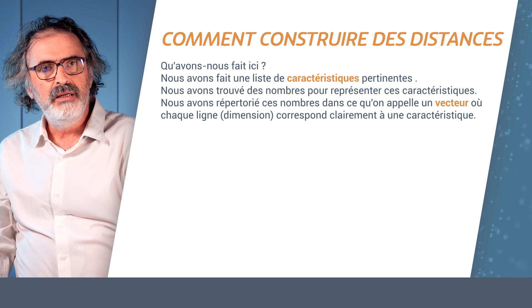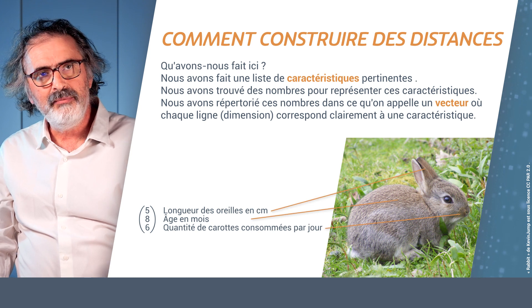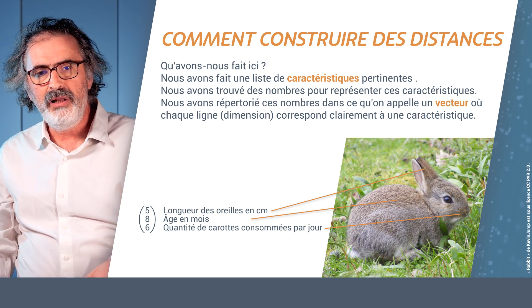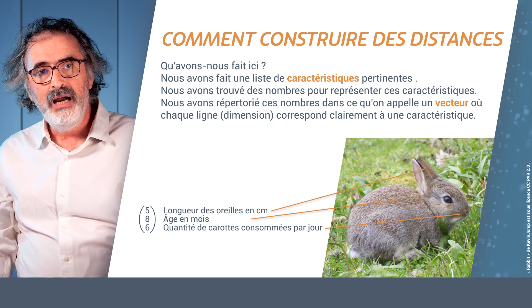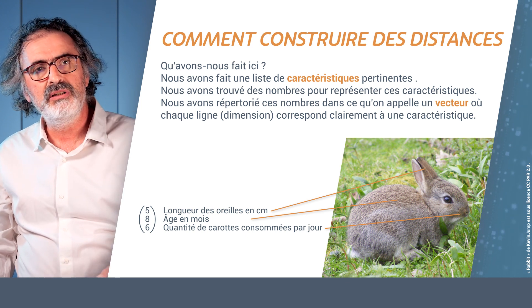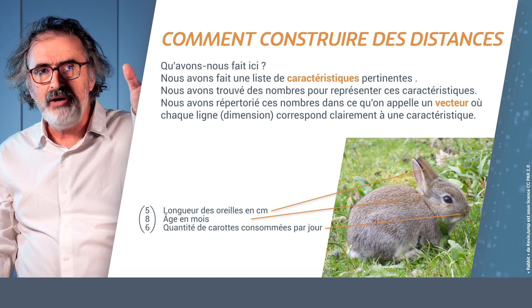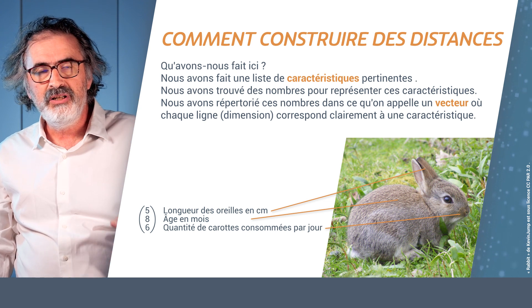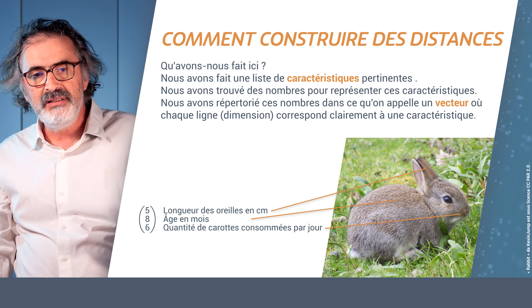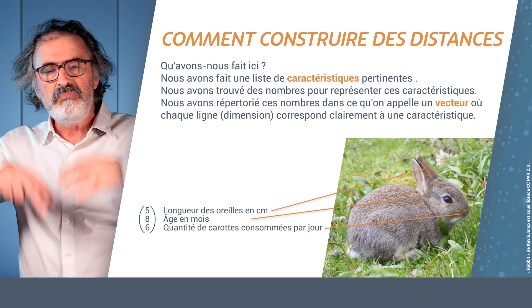So how to build distances? The first thing we have to do is build it upon features — elements I am going to extract from whatever I want to measure. If I take a rabbit, for example, I might be able to measure the length of the ears, the age of the rabbit in months, and also the quantity of carrots it obtains per day. In that case, I can give for each rabbit an associated vector, which is just a set of numbers — one number for each one of those features — and I have this vector which defines the rabbit as belonging to a three-dimensional space.